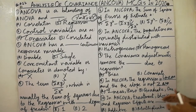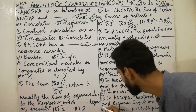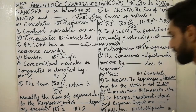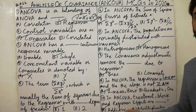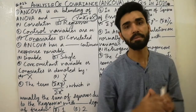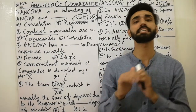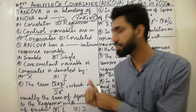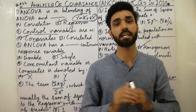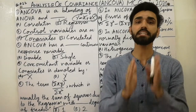In ANCOVA, the treatment, group, and regression effects are always additive. When you make the table, these options are always additive. Also share this lecture as much as you can. Thanks for watching. If you like this video, please subscribe to my YouTube channel and press the bell button to get notifications of my new lectures.